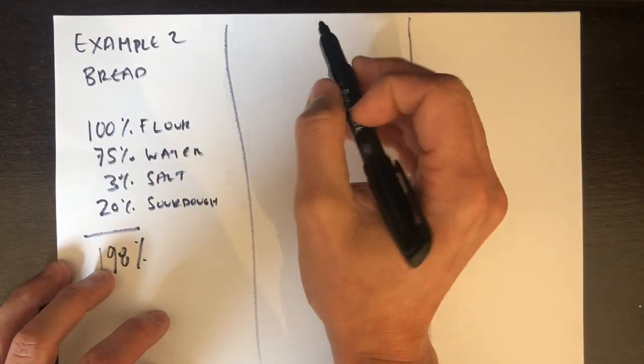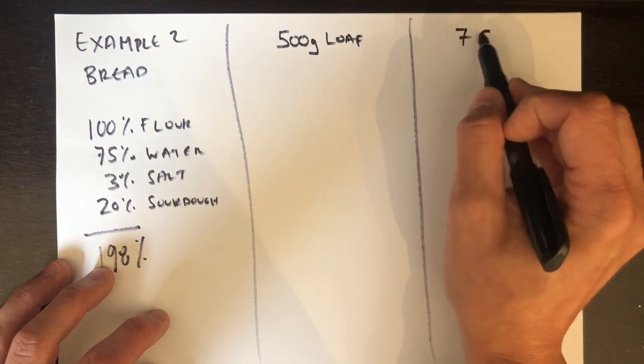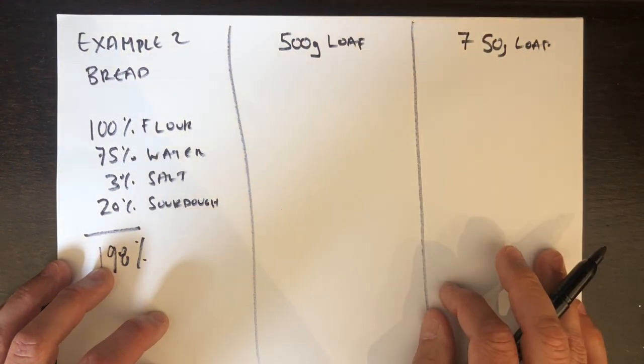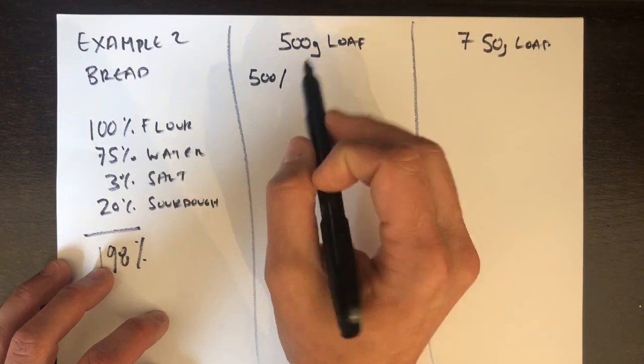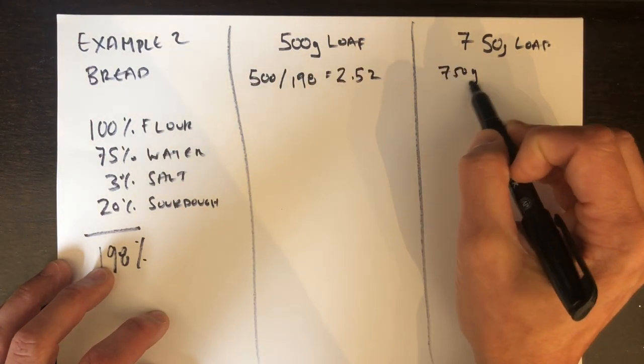All right. So I'm going to try to make two recipes here. One for a 500 gram loaf and one for a 750 gram loaf. This is typically the size of dough balls that I like to make. So I'm just going to start by taking that 198 number by adding up all my percentages.